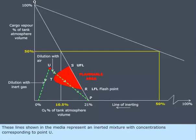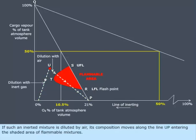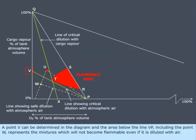These lines, shown in the media, represent an inerted mixture with concentrations corresponding to point U. If such an inerted mixture is diluted by air, its composition moves along the line UP, entering the shaded area of flammable mixtures. A point V can be determined in the diagram, and the area below the line VP, including the point W, represents the mixtures which will not become flammable even if diluted with air.